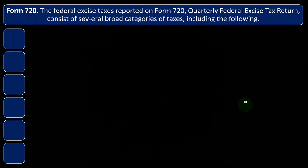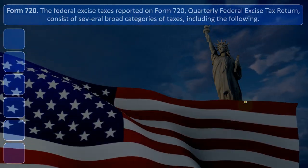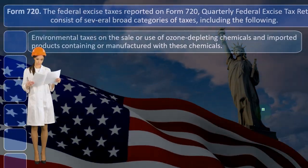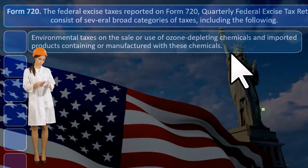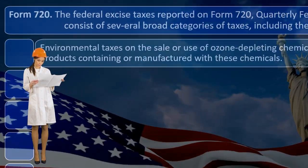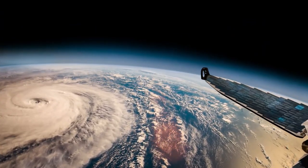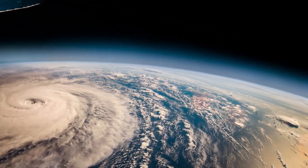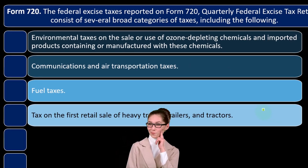Federal excise taxes are reported on Form 720, the quarterly federal excise tax return, which consists of several broad categories of taxes including: environmental taxes on the sale or use of ozone-depleting chemicals and imported products containing or manufactured with these chemicals. The ozone was a significant environmental issue for a while, and they did a good job addressing it — the ozone seems to be repairing itself. There are also communications and air transportation taxes, as well as fuel taxes.